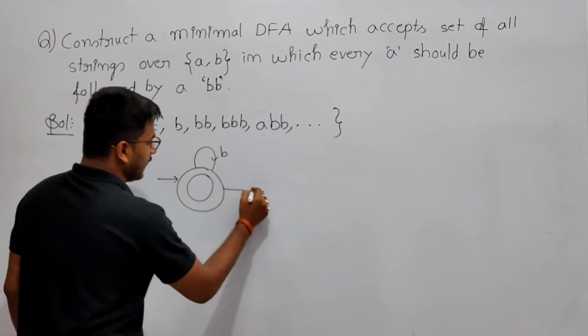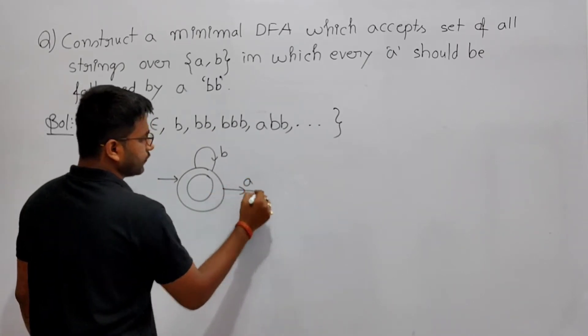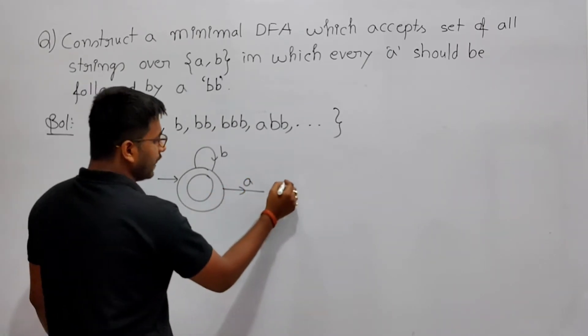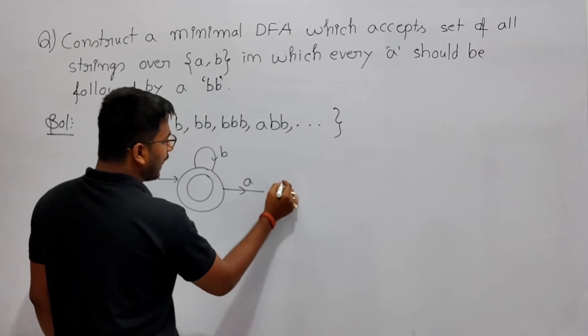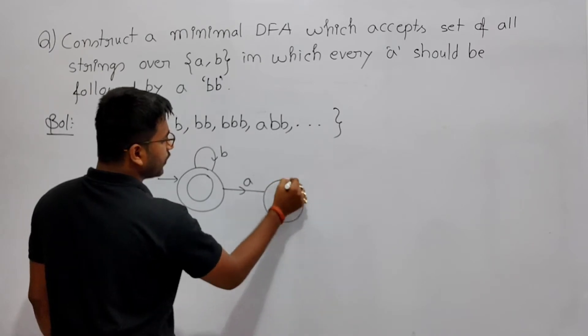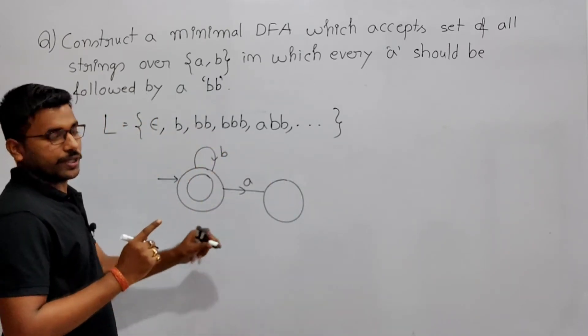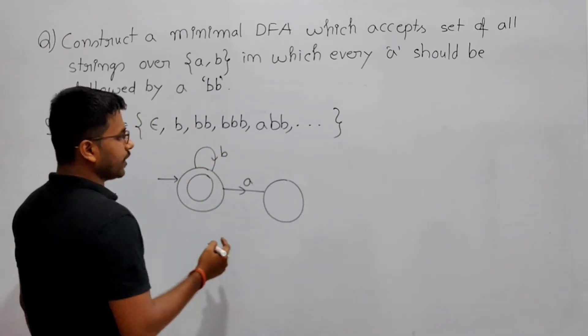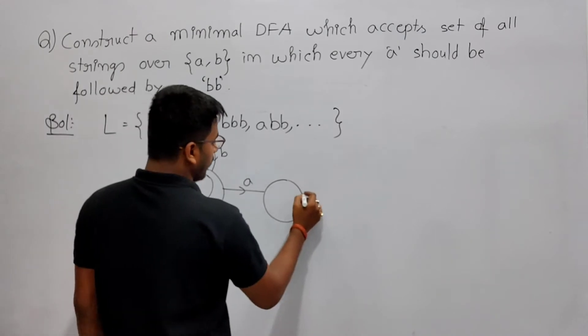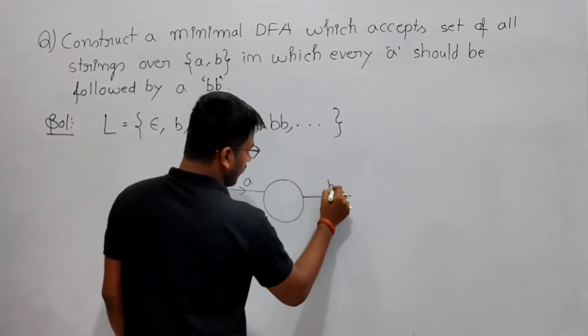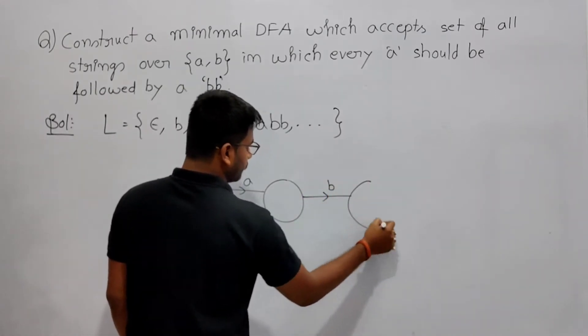Now if it is getting A, then after A it should have two B's. A single A does not belong to the language. After A it should have two B's — so after getting the first B, we go to another state, and after the second B we come back.